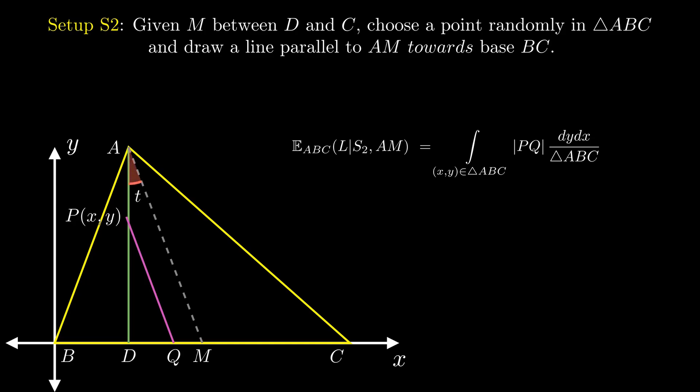Then the average length in this setup is the double integral of PQ over the triangle ABC. Letting T as the angle between AM and altitude AD, it is clear that PQ equals Y by cos T. Using the result from setup 1, it is quite easy to see that the integral evaluates to AD by 3 cos T, which is the same as AM by 3.